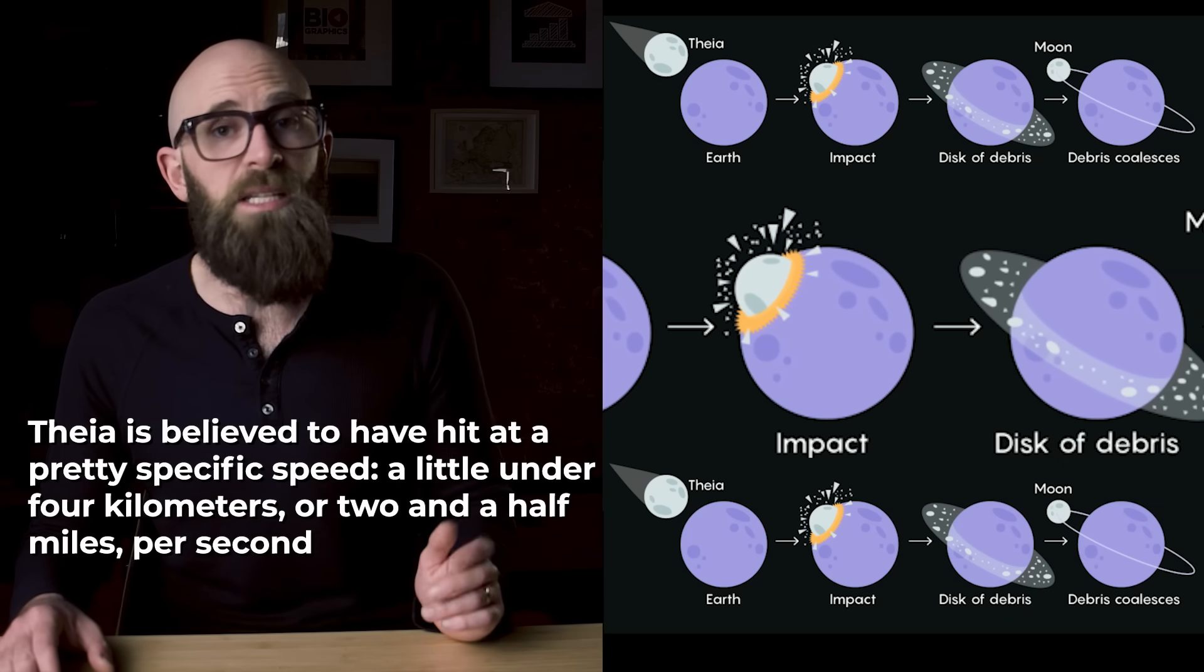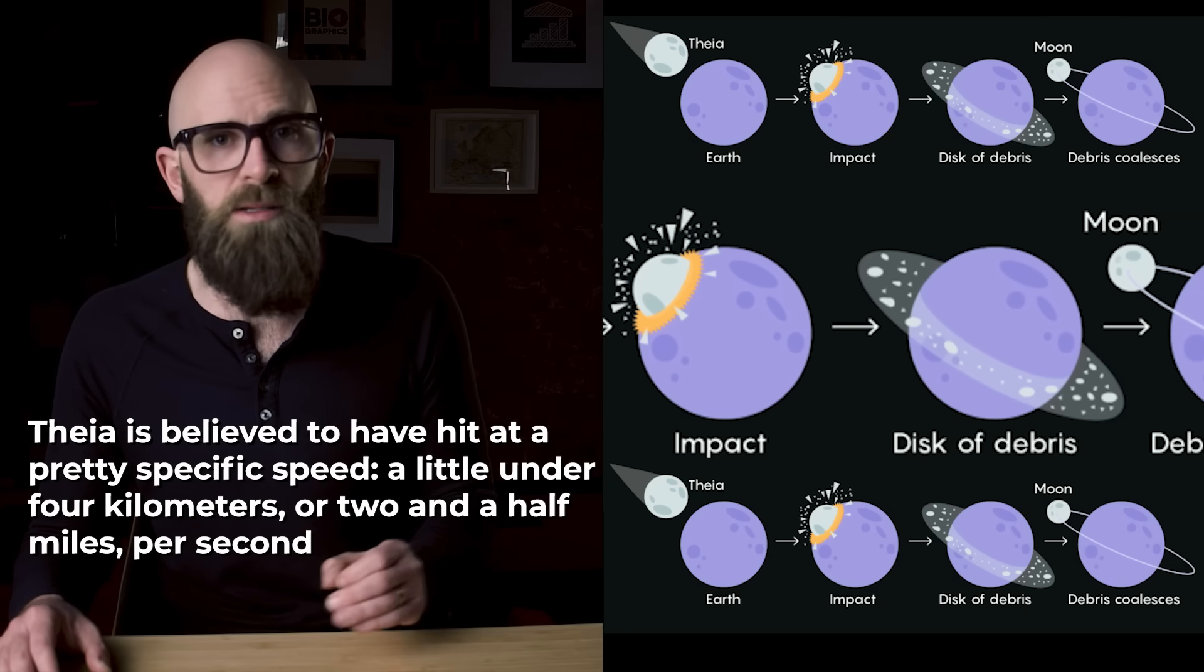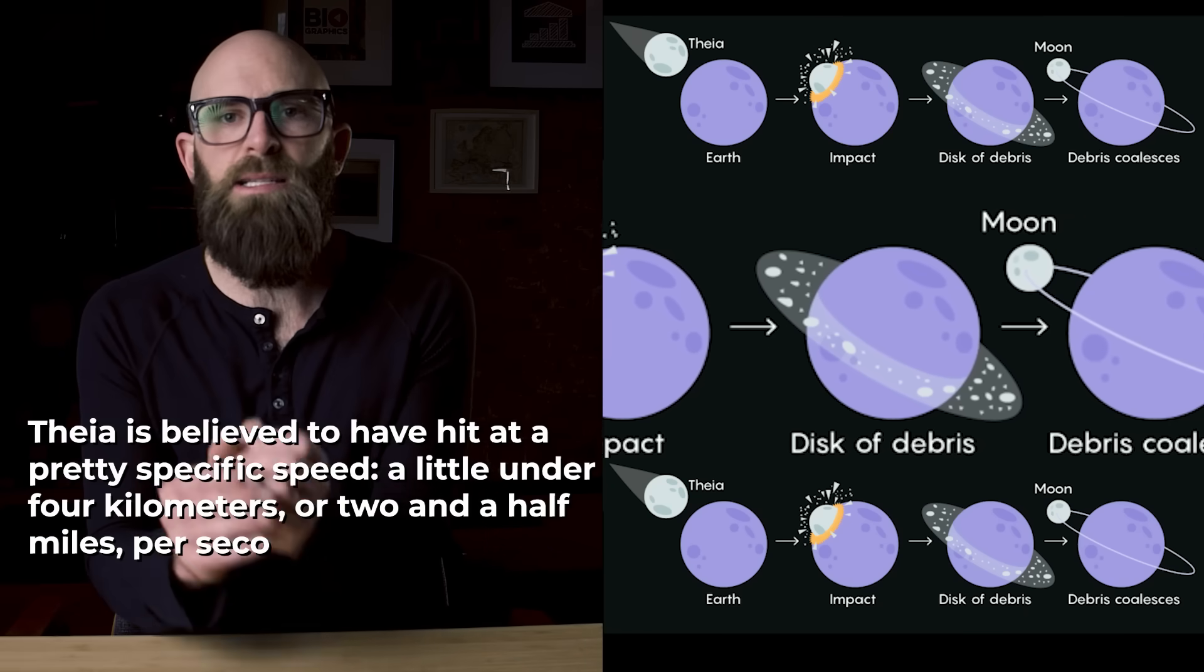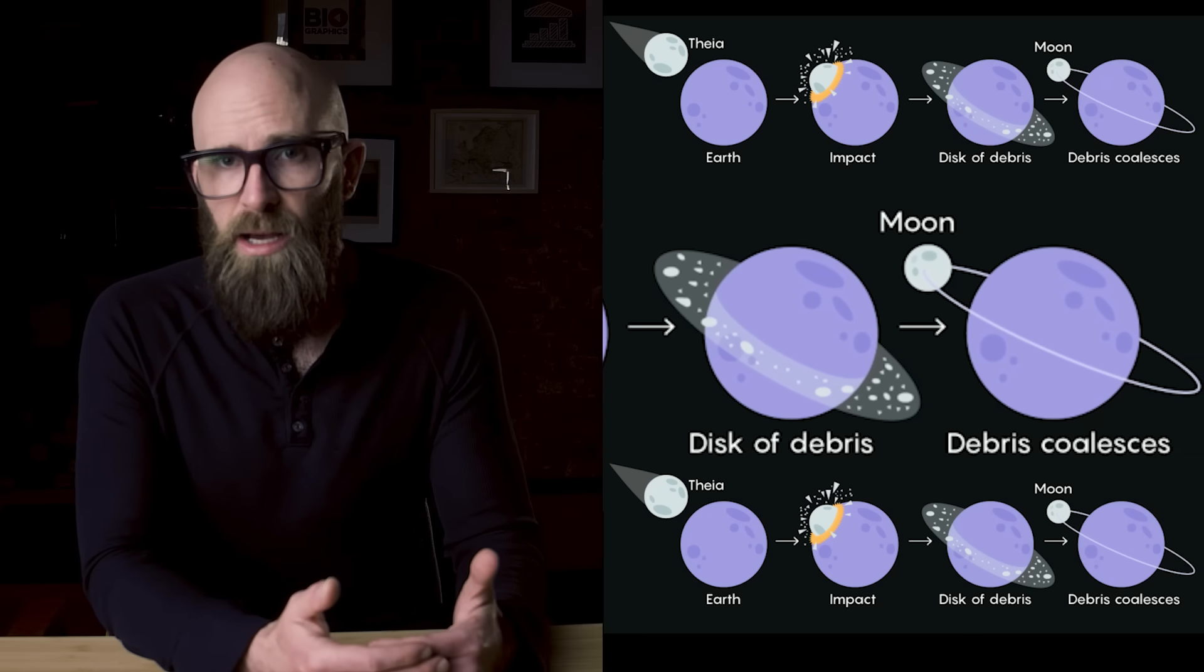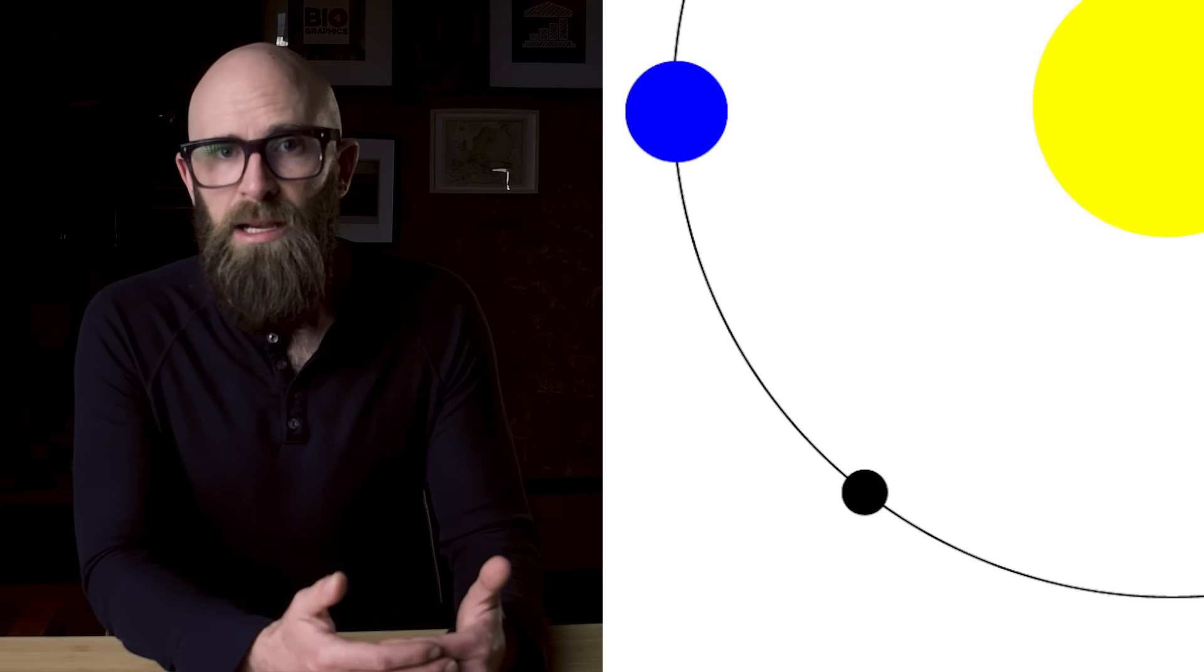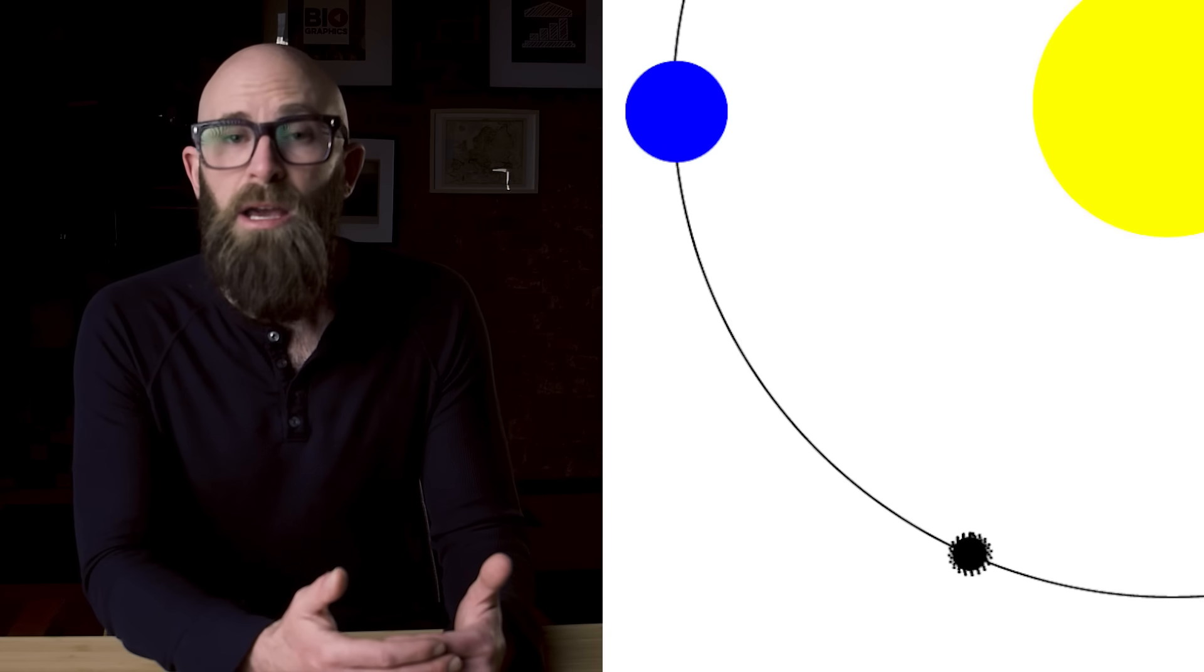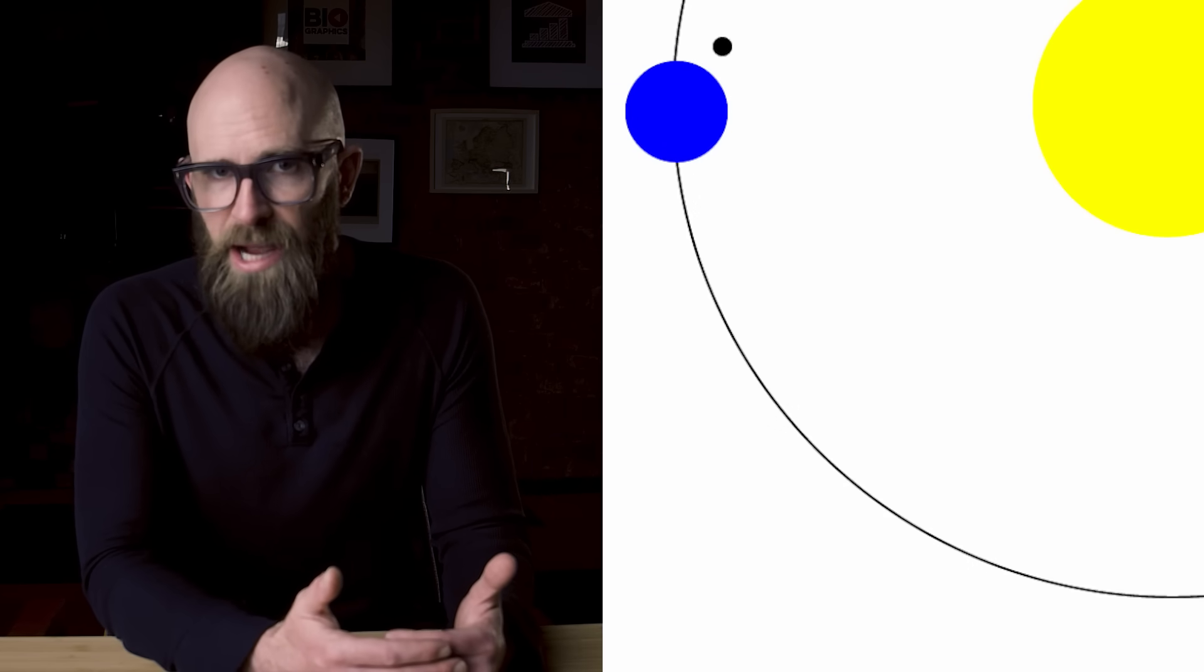So instead, Theia is believed to have hit at a pretty specific speed, a little under four kilometers or two and a half miles per second. A more recent study led by scientists from the University of Arizona suggests that Theia might have been flying by Earth when it skimmed off the larger planet, coming in at a higher speed for a hit-and-run but then slowing down because of the impact and having most of its now-disrupted mass swing back around for the primary impact.